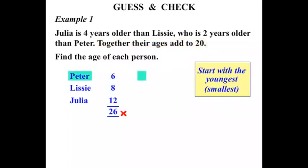Our next guess then, if we are a little bit high, let's guess a little bit lower. So let's say Peter was 5. Going through our information, Lissy, 2 years older, would be 7. And Julia, 4 years older than Lissy, would be 11.